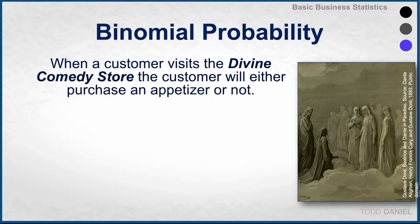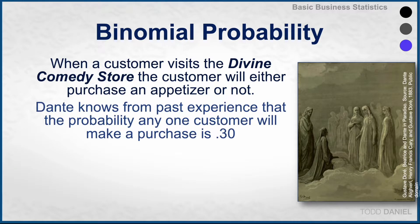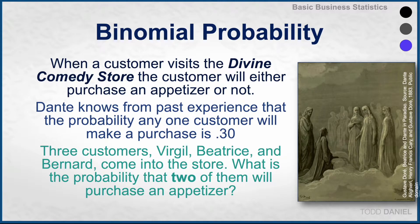Returning to our business of the week, Dante is going to go into the books and find out sales records for appetizers at the Divine Comedy Store. When a customer visits the Divine Comedy Store, the customer will either purchase an appetizer or not. Dante knows from past experience reviewing sales records that the probability that any one customer will make a purchase is 0.30. Three customers — Virgil, Beatrice, and Bernard — come to the Divine Comedy Store one evening. What is the probability that exactly two of them will purchase an appetizer?